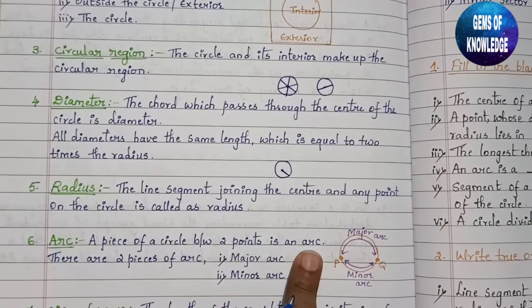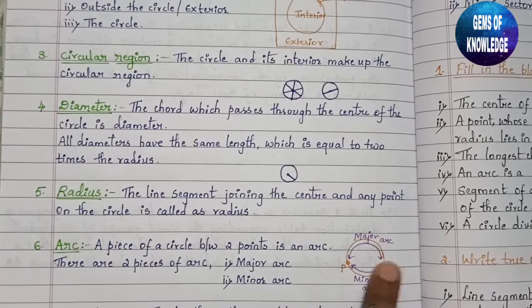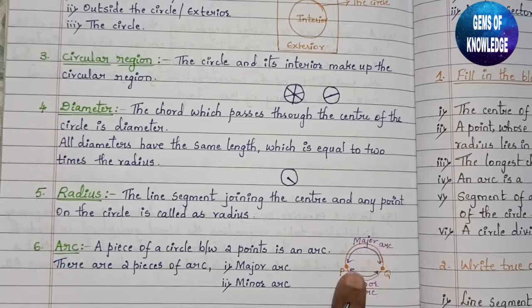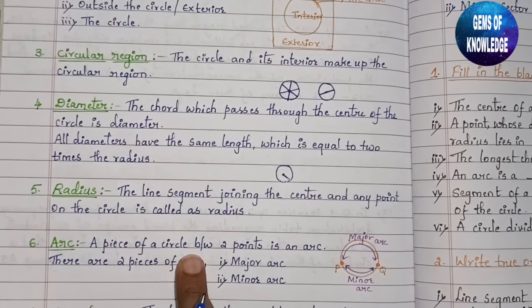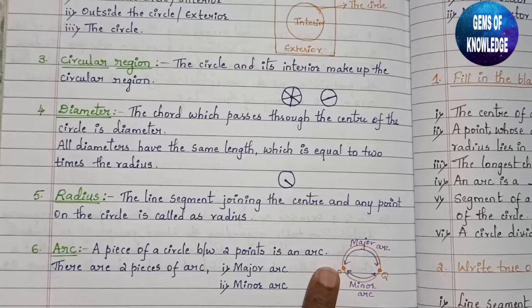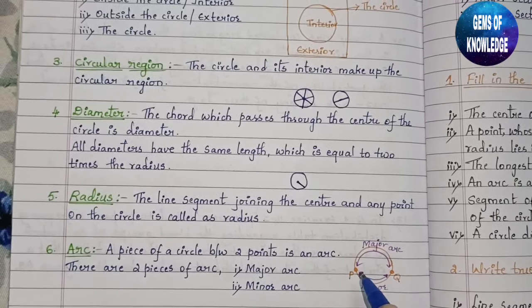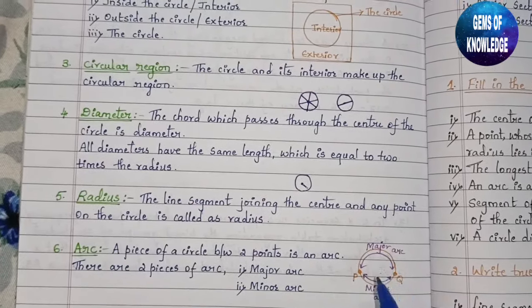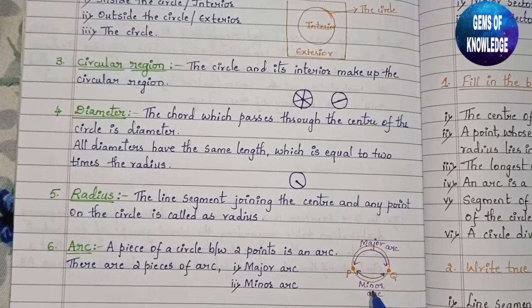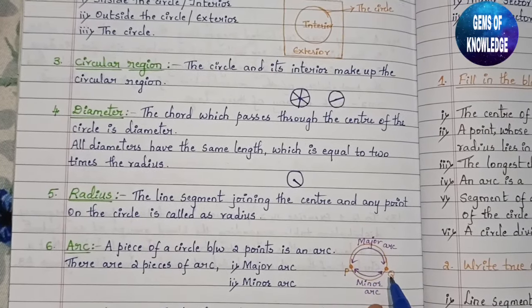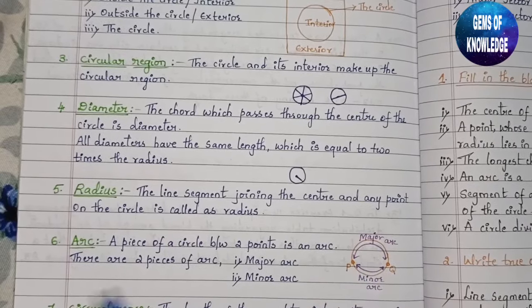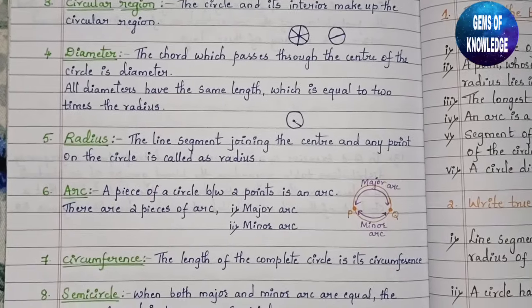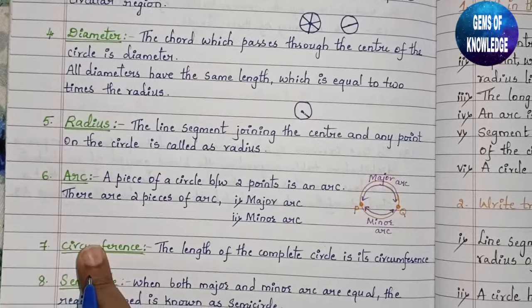Next comes arc. A piece of a circle between two points is an arc. For example, with two points P and Q, there are two pieces of the circle — one piece is one arc and the other piece is also an arc. One will be the major arc and one will be the minor arc. Smaller distance means minor arc; larger distance means major arc.